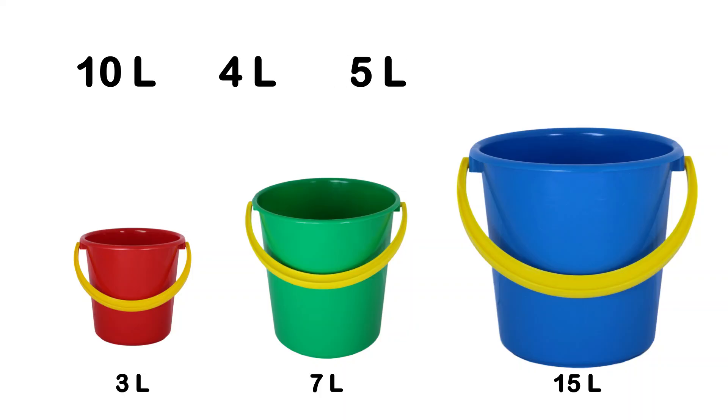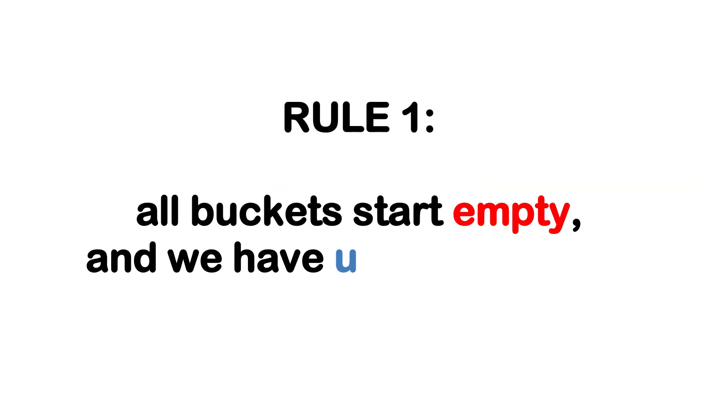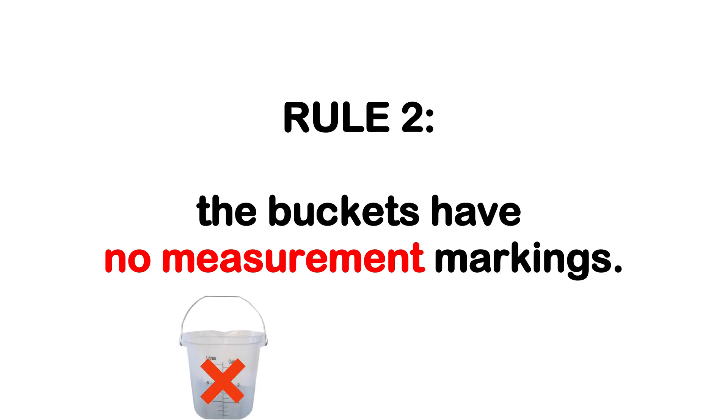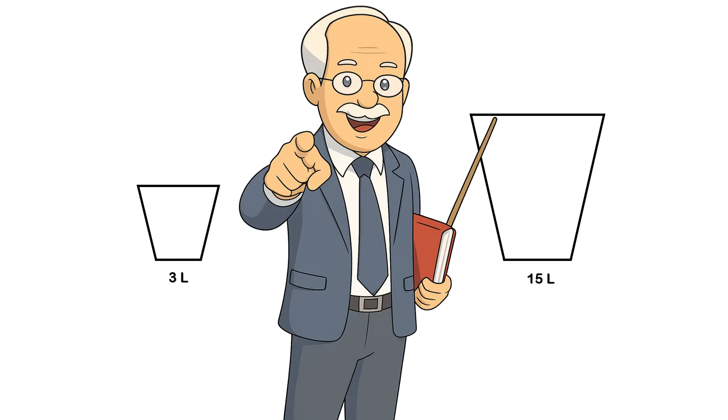But before we jump into the solutions, there are two important rules. Rule 1: All buckets start empty, and we have unlimited water. Rule 2: The buckets have no measurement markings. That means you can't partially fill or partially empty them, and each bucket is either completely full or completely empty. If you want to try the puzzle on your own, pause the video here and think about it for a moment.